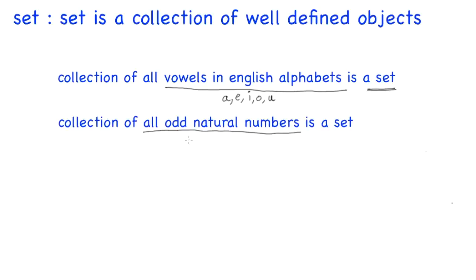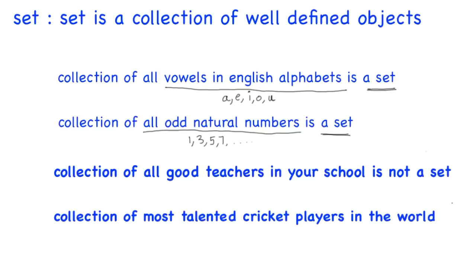Another example: the collection of all odd natural numbers. All odd natural numbers are well-defined. The odd natural numbers are 1, 3, 5, 7, and so on. So this collection is well-defined, and the collection of all odd natural numbers is a set.